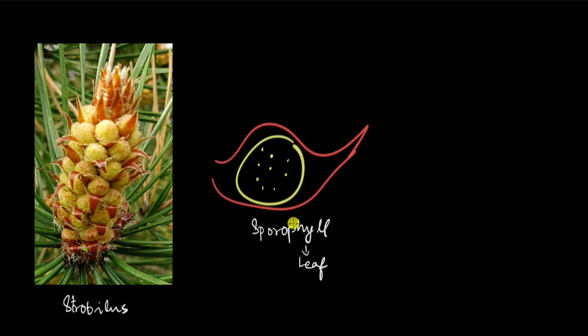A sporophyll is a modified leaf which is involved in producing spores. Inside the sporophyll there is this round yellow structure which is the sporangium, and naturally the tiny dots inside are the spores.